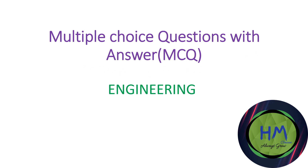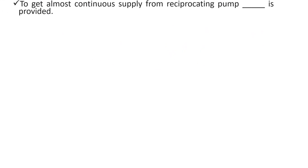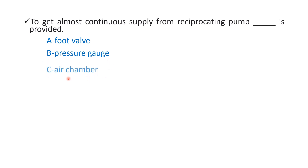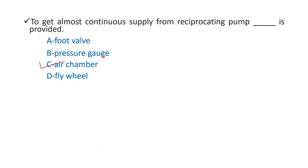Our first question: to get almost continuous supply from a reciprocating pump, blank is provided. Option A: football, Option B: pressure gauge, Option C: air chamber, Option D: flywheel. The right answer is Option C — air chamber.